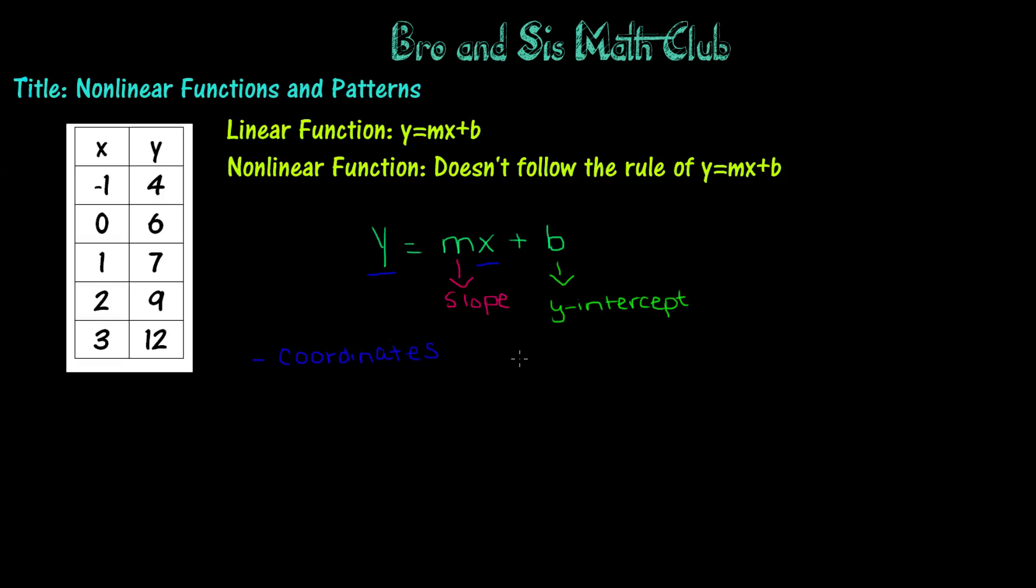If there is a slope which is the same, then that means that the function is going to be linear. However, if the slope isn't the same in the coordinates, that would make the function nonlinear.